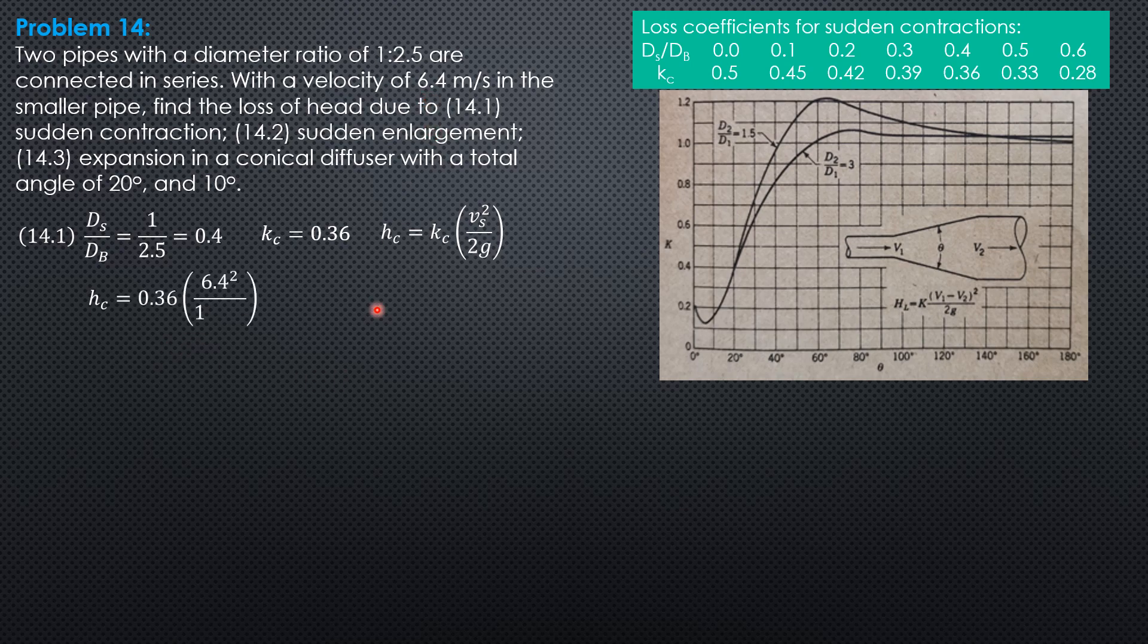0.36 of 6.4 squared over 19.62 equals 0.7516 meters.